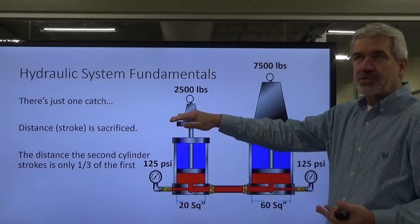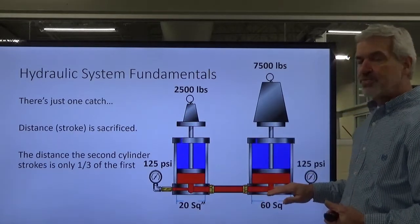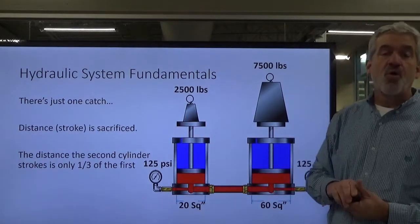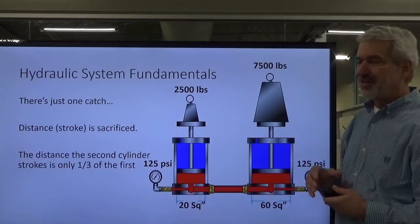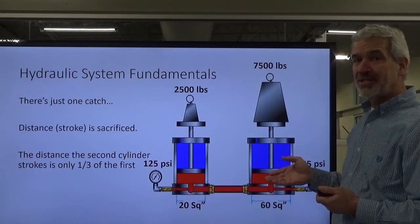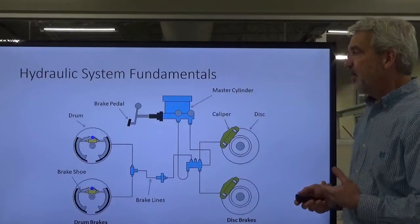So if we stroke this number one cylinder at 20 square inches, suppose we just stroked it 12 inches. We could press down 12 inches. Then this one is going to raise about one third or four inches of travel. So you're going to get more force multiplication, but you're going to get less travel in that second cylinder.